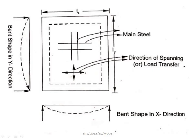In a two-way slab, the slab is supported on all four sides — by beams or walls. Main steel reinforcement is provided in both directions.